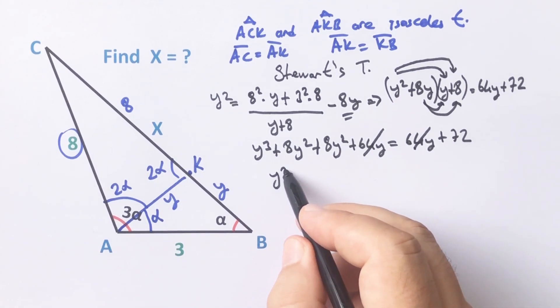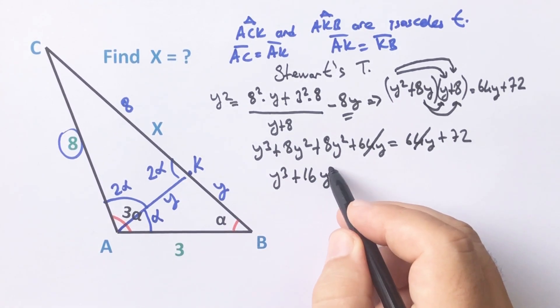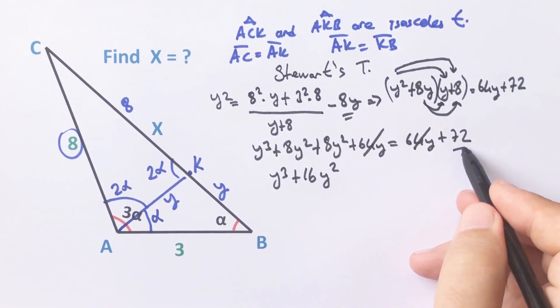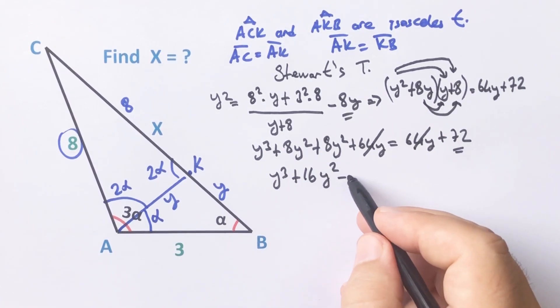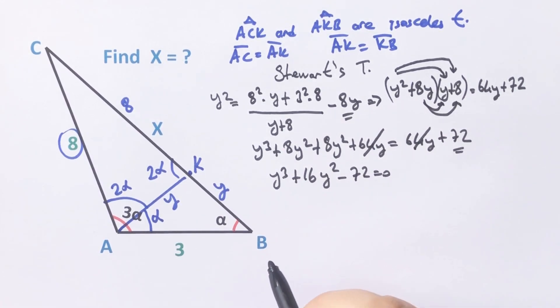Therefore, simplifying: y cubed plus 16y squared minus 72 equals zero.